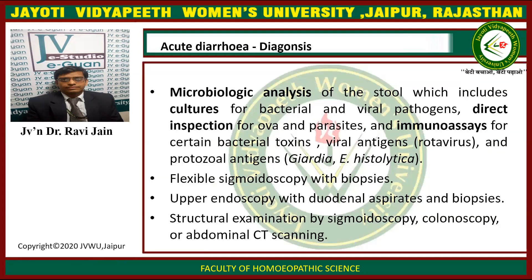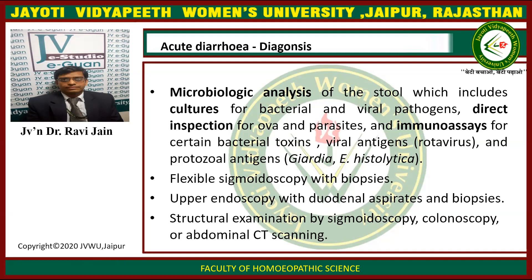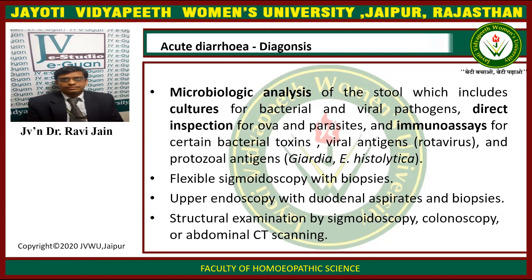How to diagnose the case of acute diarrhea? As discussed, microbiological analysis of the stool is required, which includes cultures for bacterial and viral pathogens, direct inspections for ova and parasites, and immunoassays for certain bacterial toxins. Viral antigens like rotavirus and protozoal antigens like Giardia and Entamoeba histolytica are required. Flexible sigmoidoscopy for biopsies is required. For endoscopy, do duodenal aspiration and biopsy. There can be structural examination by sigmoidoscopy, colonoscopy, or abdominal imaging.